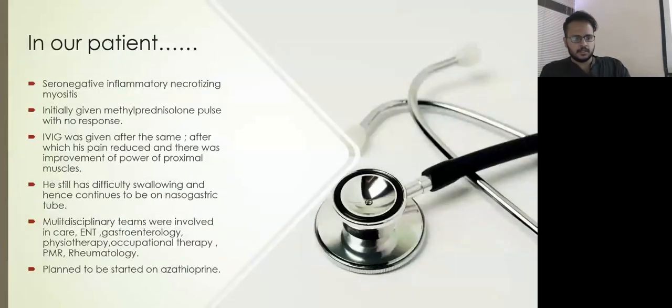Coming to our patient: he had seronegative inflammatory necrotizing myositis. Initially, he was given methylprednisolone pulse with no or minimal response. Hence, IVIG was given. After IVIG, there was significant improvement in both pain and power. He was able to walk and his pain significantly came down, though he still has some residual difficulty swallowing. He's still on an NG tube.